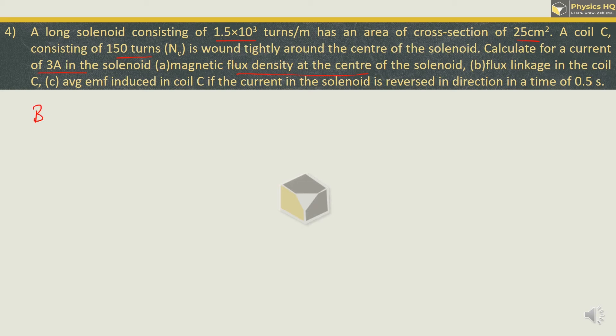Calculate for a current of 3 ampere in the solenoid maximum flux density at the center of the solenoid. Now maximum flux density at the center of the solenoid is given by the formula mu 0 n i, where mu 0 is permeability of free space with value 4 pi into 10 raise to minus 7. Small n is number of turns per meter of the solenoid which is 1.5 into 10 raise to 3, and the current flowing is 3 ampere. So 4 threes are 12, 1.5 is 18 into pi which is 3.142 into 10 raise to minus 4. When we multiply this we will get 56.556 into 10 raise to minus 4, or we can write this as 5.66 into 10 raise to minus 3 tesla.